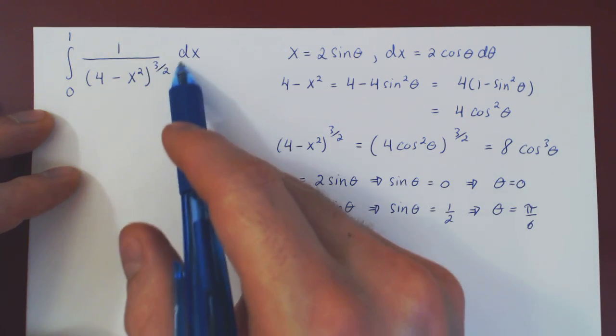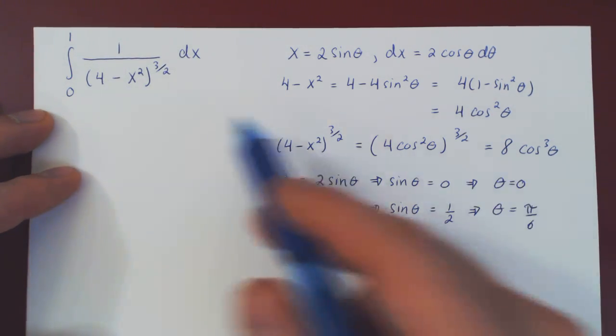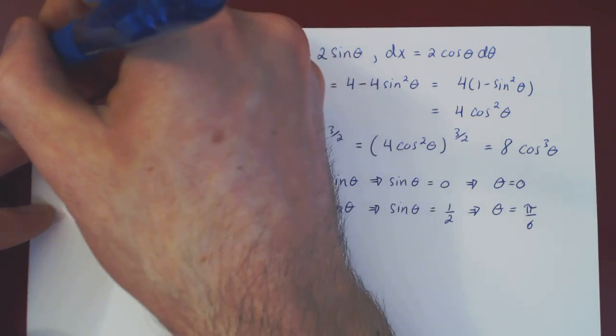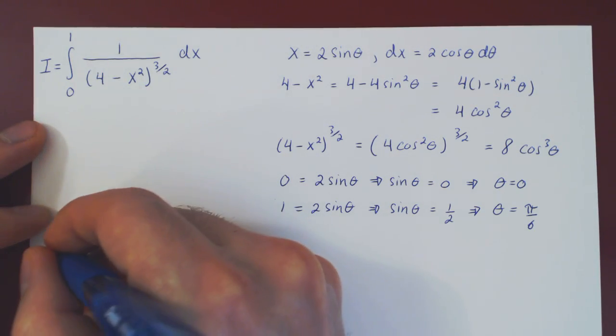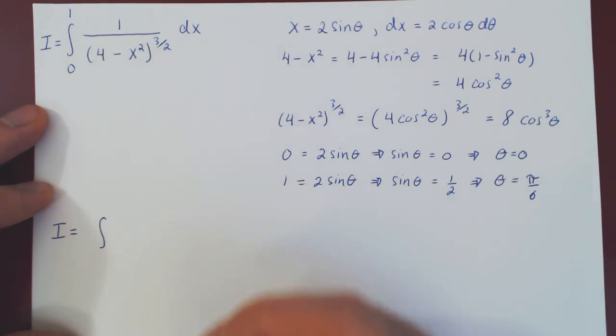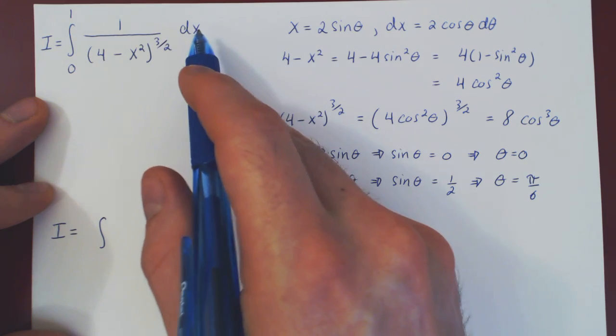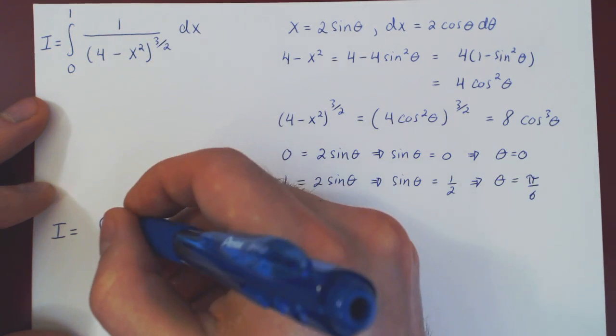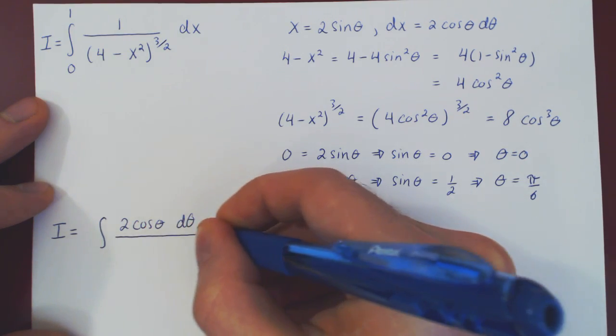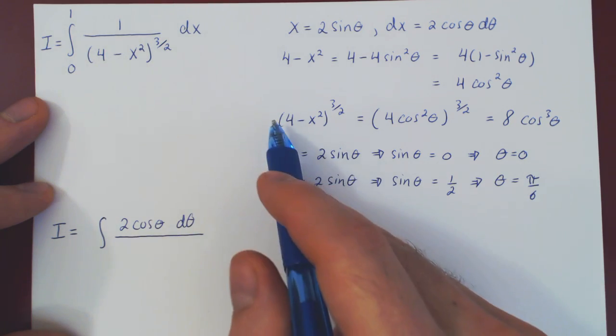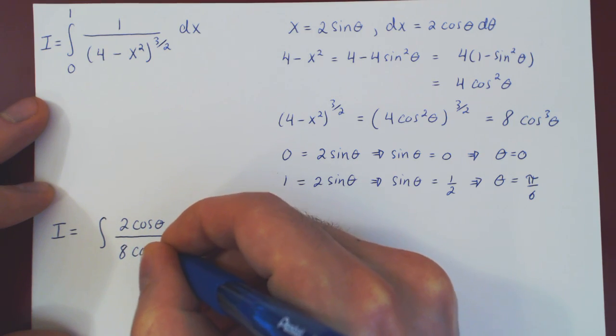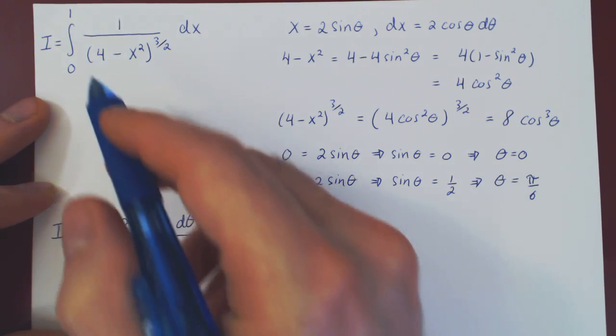And now we're good to go. We have every part of the integral, including the bounds of integration, now in terms of theta. So, if I call this i, then what do we have? If i equals the integral of, on top we only have dx, which is 2 cos theta d theta, over 4 minus x squared to the 3 half, which we know is 8 cos cubed of theta, and of course we need to change our bounds of integration.